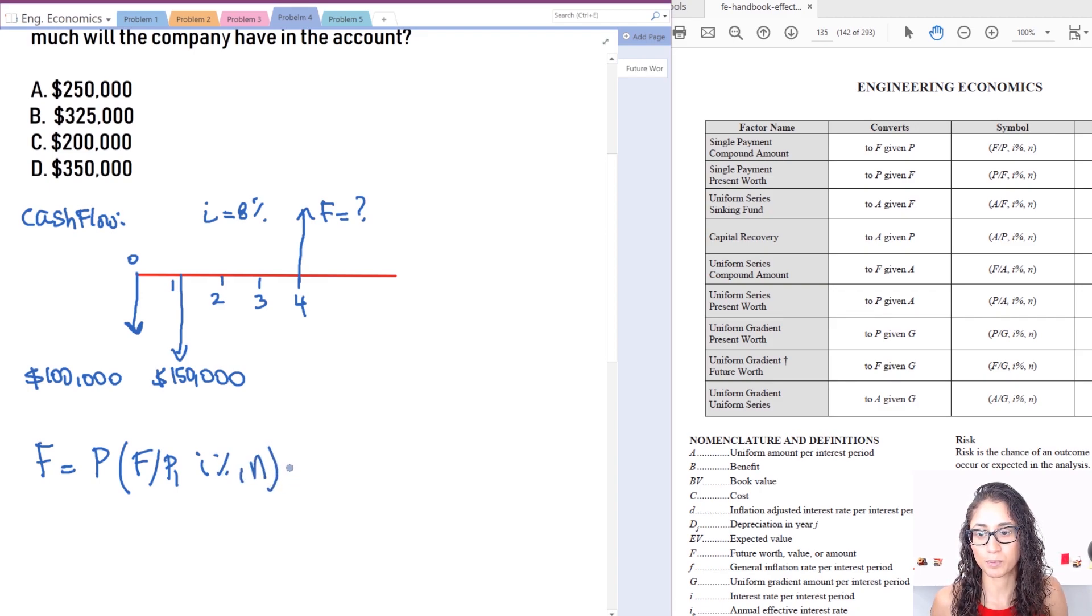Plus we're going to have two values because we have two deposits, right? So they're going to be slightly different, which you guys will see why. So I have another P(F/P), then I have i percent, and then we have N.